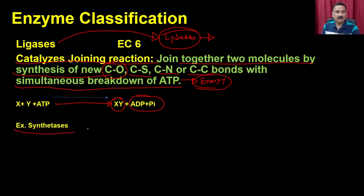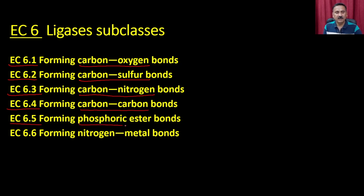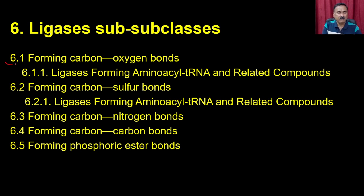Ligases are further classified based on the bonds they form: EC6.1 forms carbon-oxygen bonds; EC6.2 forms carbon-sulfur bonds; EC6.3 forms carbon-nitrogen bonds; EC6.4 forms carbon-carbon bonds; EC6.5 forms phosphoric ester bonds; EC6.6 forms nitrogen-metal bonds. These groups are further classified into sub-subclasses.